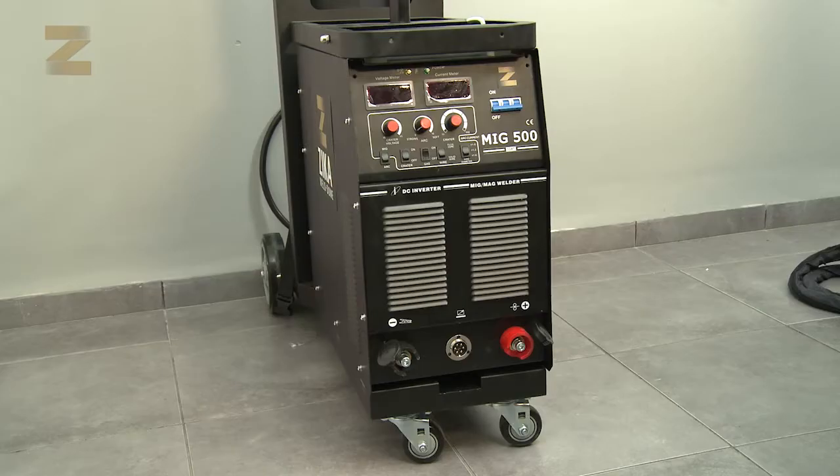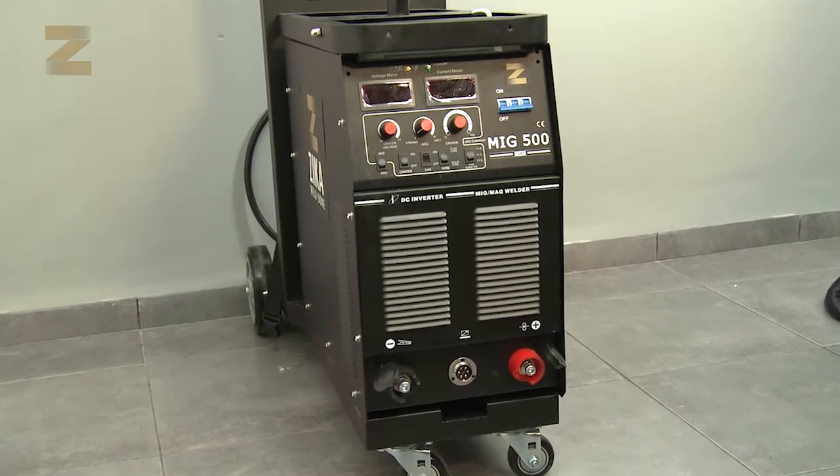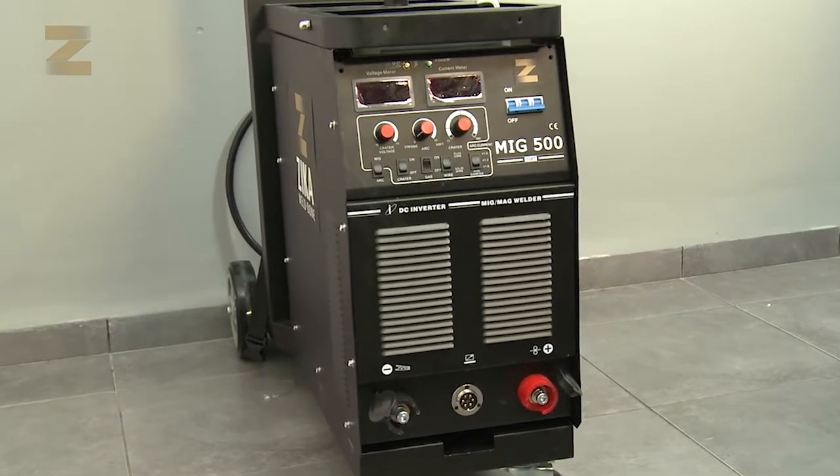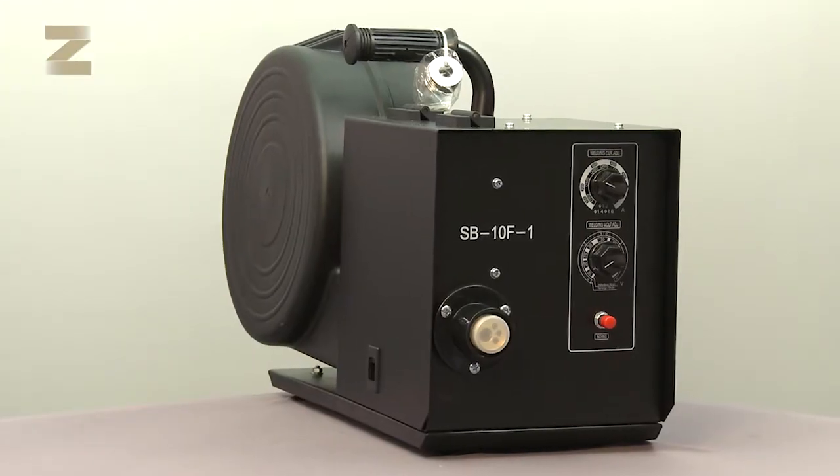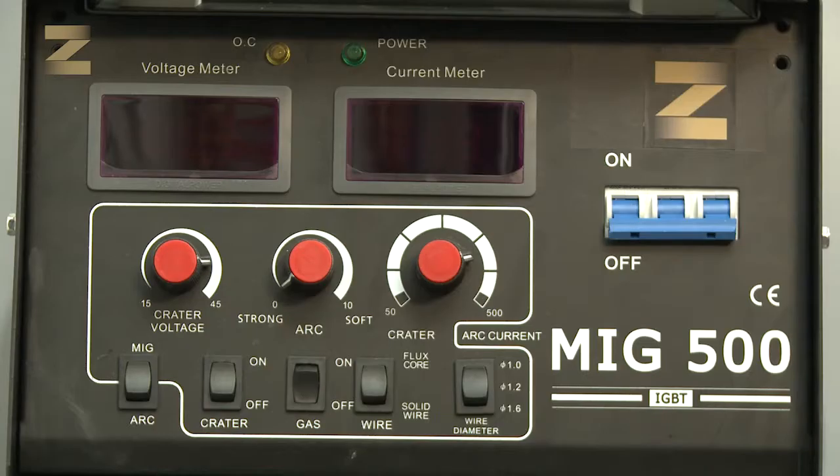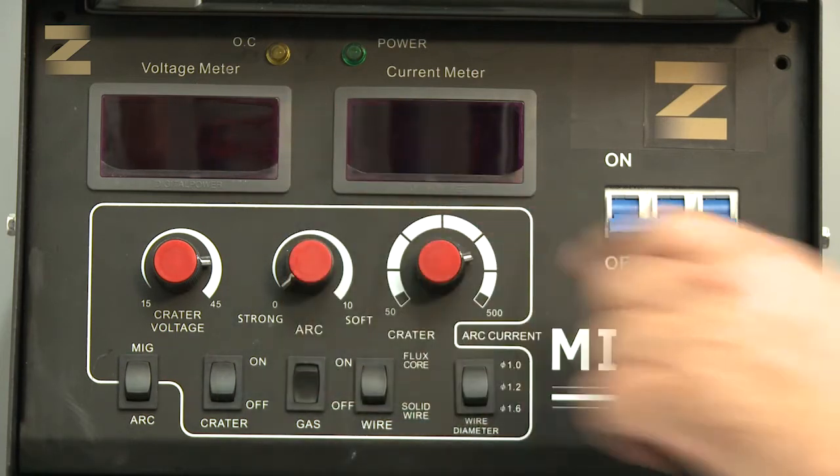Let's get to know the machine. The MiG-500 is composed of two parts, a power supply and feeder. On the top of the power supply there are two indicator lamps, one green and one yellow. The yellow one turns on in case of overheating. The green one turns on when the machine is switched on.